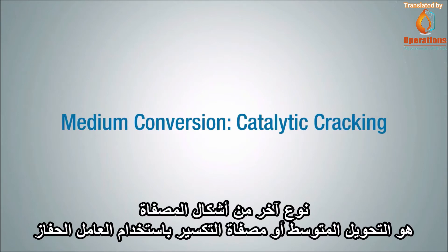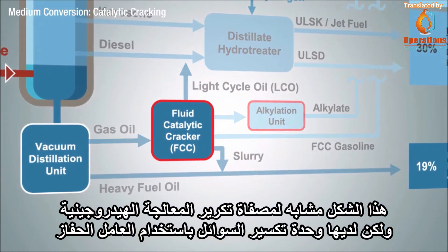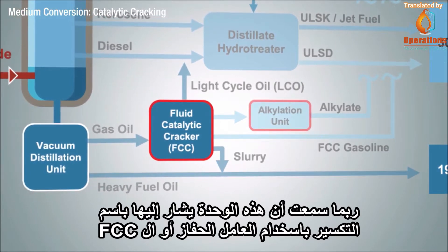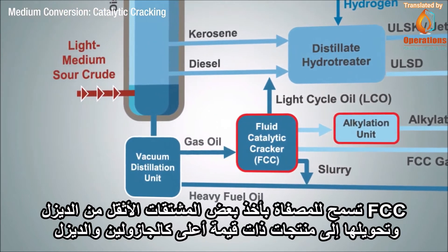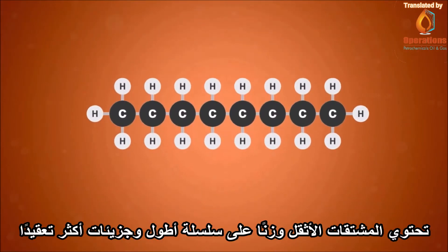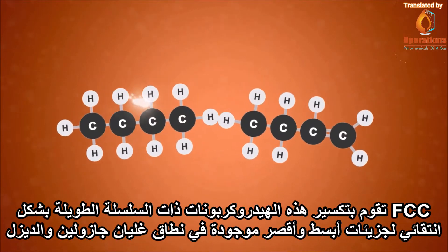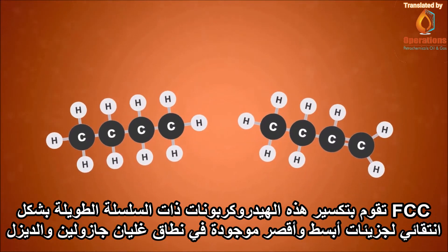Another type of refinery configuration is the medium conversion or catalytic cracking refinery. This configuration is similar to the Hydra Skimming refinery but has a fluid catalytic cracking unit — you may have heard this referred to as an FCC or a catcracker. The FCC allows the refinery to take crude fractions heavier than diesel and convert those streams to higher value products, primarily gasoline and diesel. These heavier crude fractions contain longer chain and more complex molecules, and the FCC selectively cracks these longer chain hydrocarbons into simpler and shorter molecules in the gasoline and diesel boiling range.